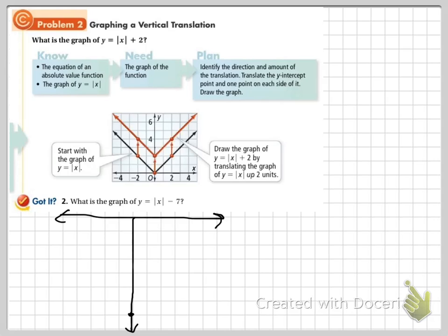So down here I'm going to move up 1 to the right 1, up 1 to the right 1. I'll go back to my bottom of my V, and I'm going to go up 1 to the left 1, up 1 to the left 1, and there's my V.